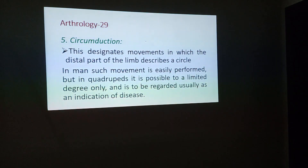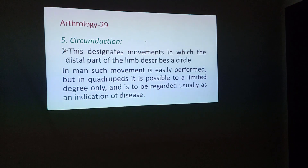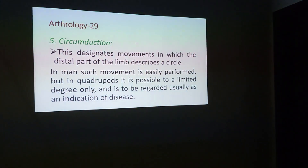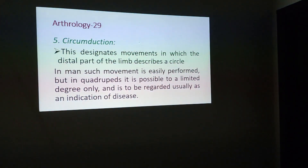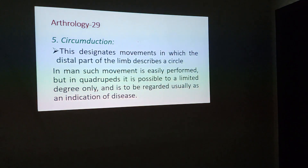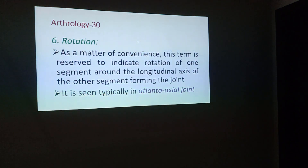Next is circumduction — movements in which the distal part of the limb describes a circle. These movements are not very much evident in animals and are easily performed in human beings. In quadrupeds, circumduction is possible only to a limited degree, and excessive circumduction in the lower limbs of quadrupeds is usually regarded as an indication of disease.